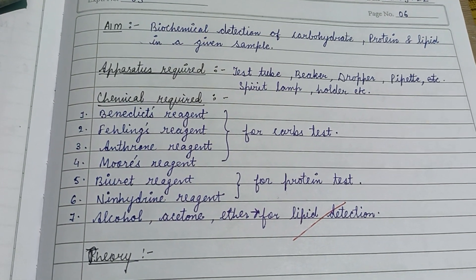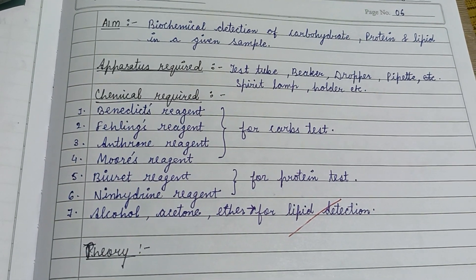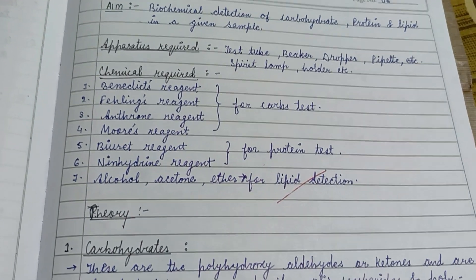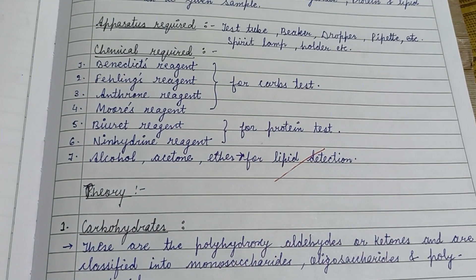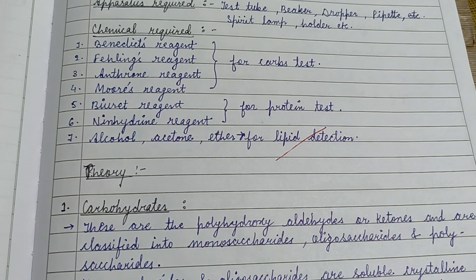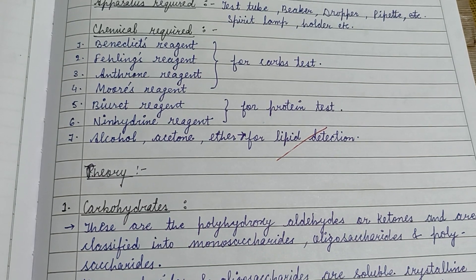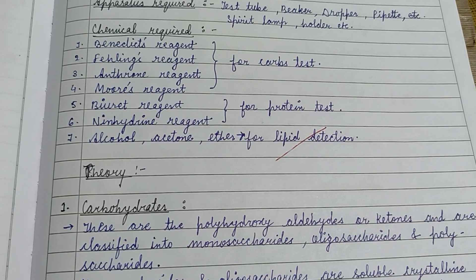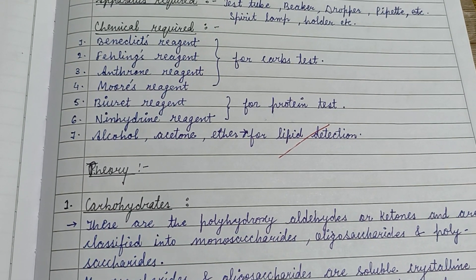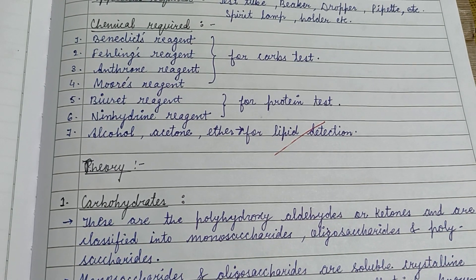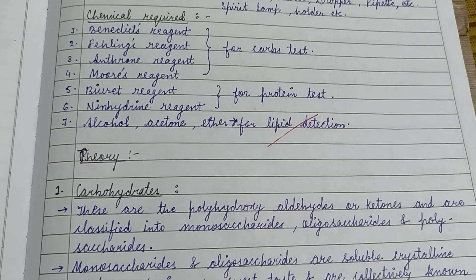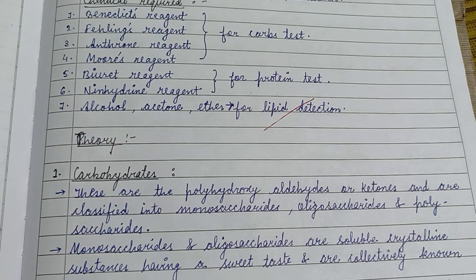Here is another video of the practical biochemistry portion. The Benedict reagent, Fehling reagent, Biuret reagent, and Molisch reagent are used in the carbohydrate test. The Biuret reagent and ninhydrin are used in the protein test, and alcohol, acetone, and ether are used for lipid detection.